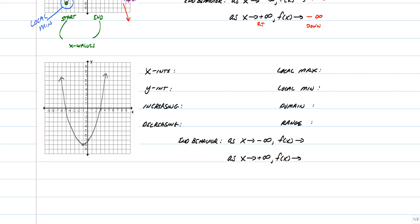Hopefully that was enough time for you to work on this question. So let's talk about our x-intercepts. Remember, our x-intercepts is where we intersect the x-axis, so you should have picked negative five comma zero, and you should have also picked three comma zero. Our y-intercept is where it crosses the y-axis, so we should have a y-intercept of zero comma negative seven.